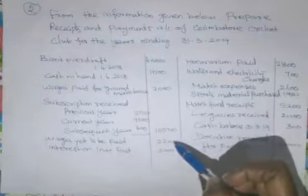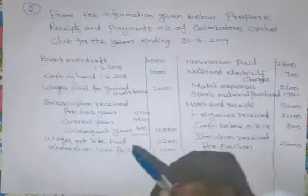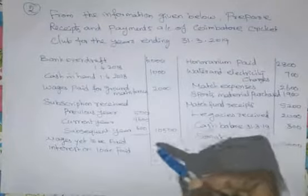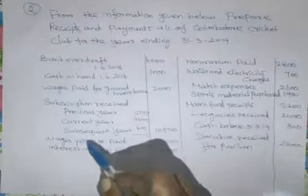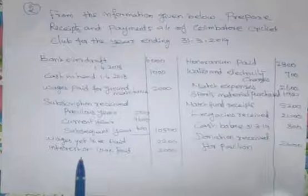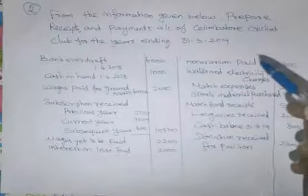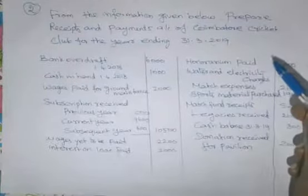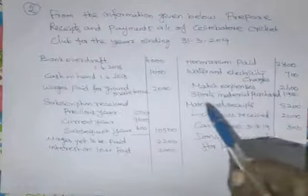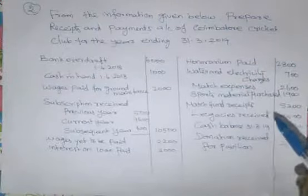Wages said to be paid Rs. 2,200 — this is an outstanding expense, yet to be paid. So this is a non-cash item; non-cash items are not entered in Receipts and Payments Account. Interest on loan paid — you borrow a loan from a bank and pay interest to the banker, so it is an expense. Honorarium paid — that is for a temporary employee, which is revenue expenditure. Water and electricity charges, match expenses, sports material purchased, match fund receipt. Legacy received is a capital receipt — it is a will. Closing cash balance. Donation receipt for pavilion.